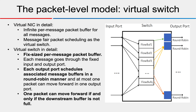A virtual link is essentially a virtual switch with only one output port, no input port, and an infinite packet buffer for all messages. A virtual switch has input and output ports like a regular switch, but internally it does not have per-port buffers; instead it has per-flow buffers — a fixed-sized per-message packet buffer for each flow passing through the switch. Each output port is associated with multiple flow buffers, scheduled in round-robin manner, and at most one packet can move forward per output port per step, only if the downstream buffer is not full.